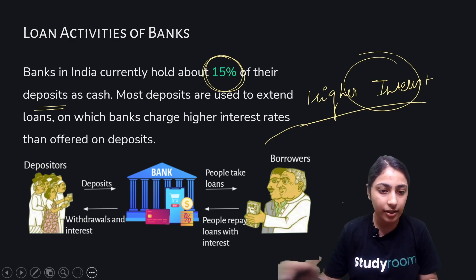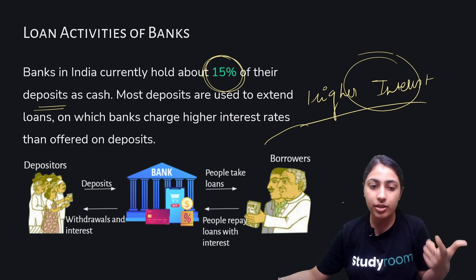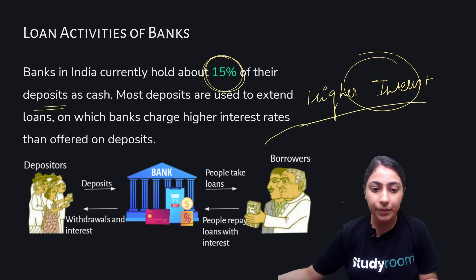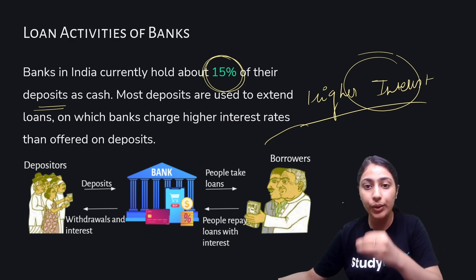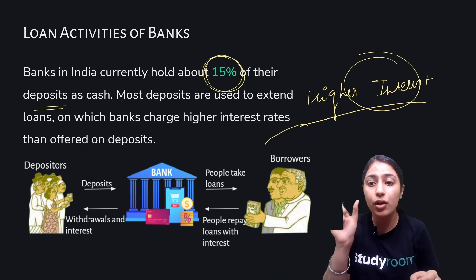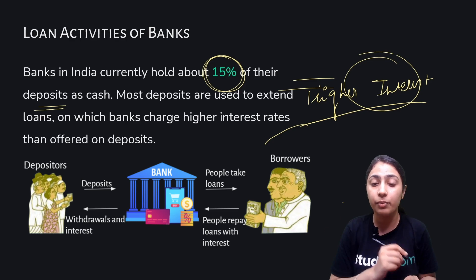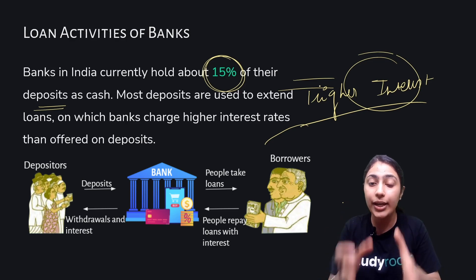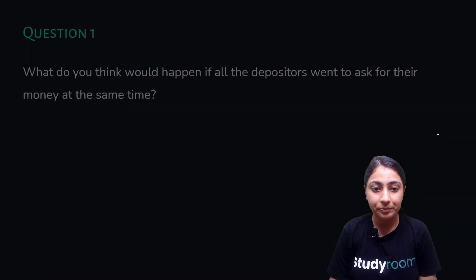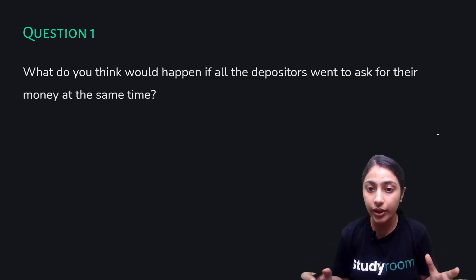There is a diagram showing this process: a person deposits money into the bank and can withdraw it with interest that the bank offers. The bank also lends money to people who need loans, and the amount of interest the bank charges to its borrowers is higher than what it gives to the people who have deposited money.